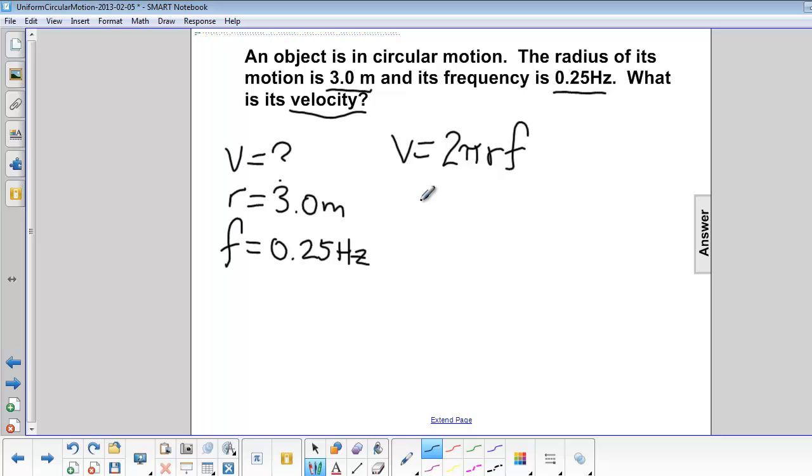Since we are looking for velocity, velocity is by itself on the left-hand side, we don't have to do any additional solving if we have every other piece of information. We have pi, that's a constant, r the radius, and f for frequency, so we just need to substitute our values.